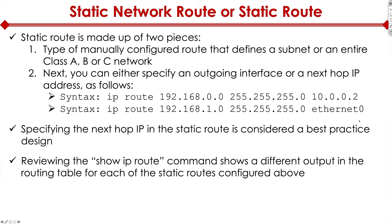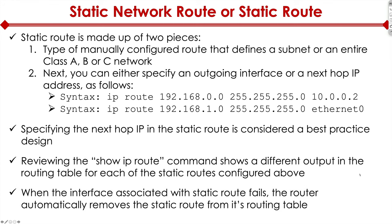Reviewing the 'show ip route' command shows a different output in the routing table for each of the static routes configured. Whether you have the next hop IP or the interface specified, the output looks different. Also, when the router interface associated with a static route fails, the router automatically removes that static route from its routing table. Now let's go to the CLI and look at this.